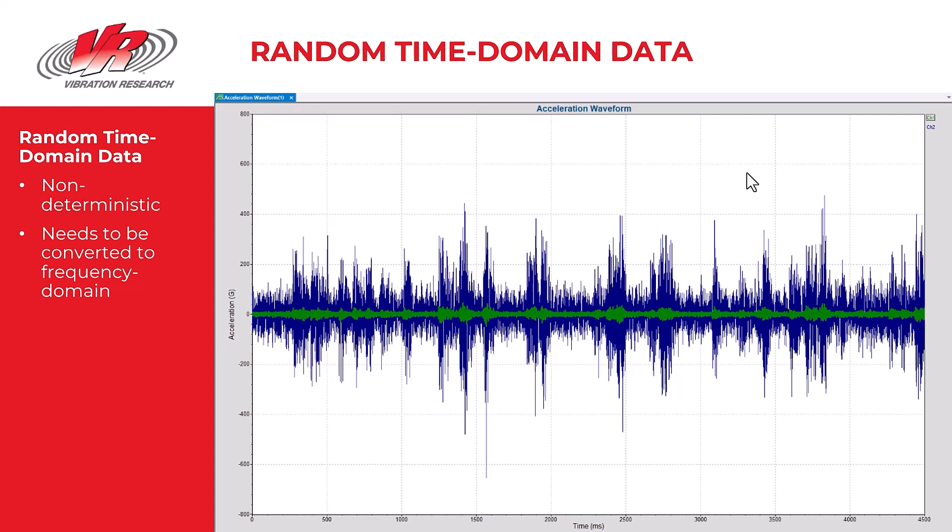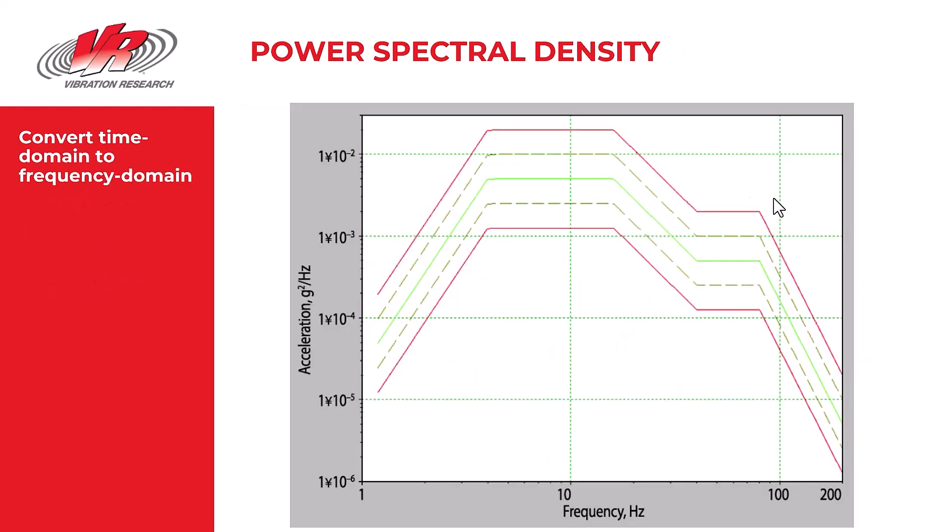In today's lesson, we want to talk about the lines of resolution. Random vibration data is generally displayed in the frequency domain as a power spectral density plot — a PSD. This plot shows the mean square acceleration per unit bandwidth, in this case acceleration squared per frequency: G squared per hertz.